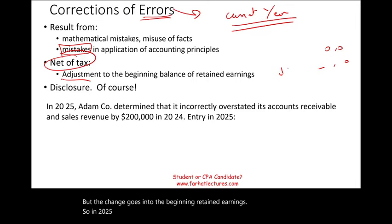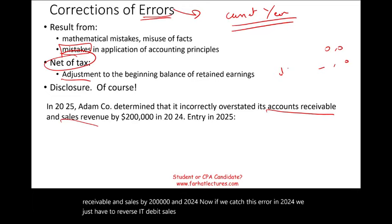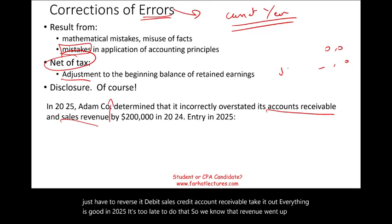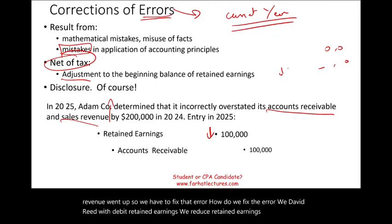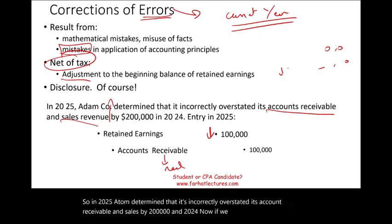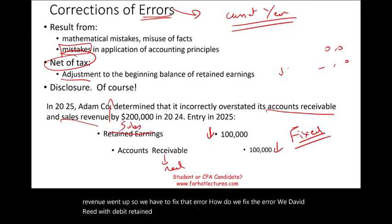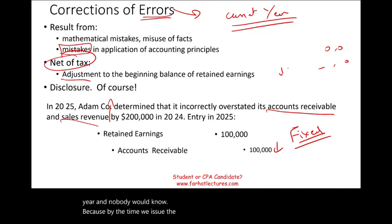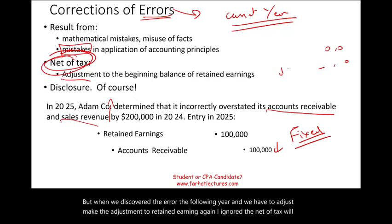For example, in 2025 Adam determined that it incorrectly overstated accounts receivable and sales by $200,000 in 2024. If caught in 2024, we'd simply debit sales and credit accounts receivable to reverse it. But in 2025 it's too late for that. Since accounts receivable is a real account that carries forward, we debit retained earnings and credit accounts receivable to fix the problem. The adjustment goes into beginning retained earnings. We ignored net of tax here — that detail will be covered in a separate chapter.